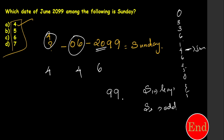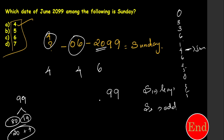Step 1: find leap years in 99. I split 99 into 80 and 19. In 80 years there are 20 leap years — wait, 80 divided by 4 is 20, but let me recalculate: 80 gives 20, and 19 gives 4. So total leap years are 24. Step 2: add 99 plus 24 equals 123 odd days.